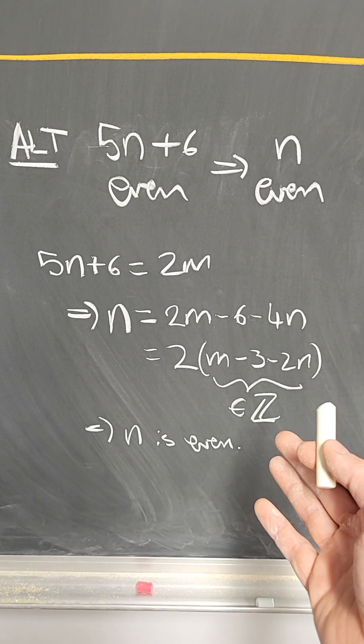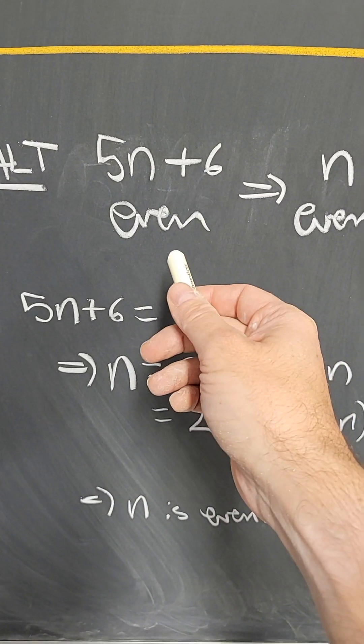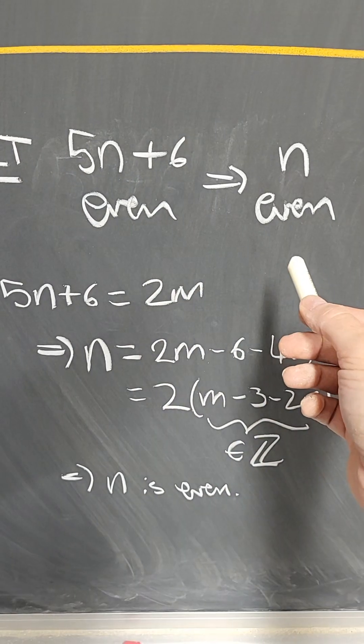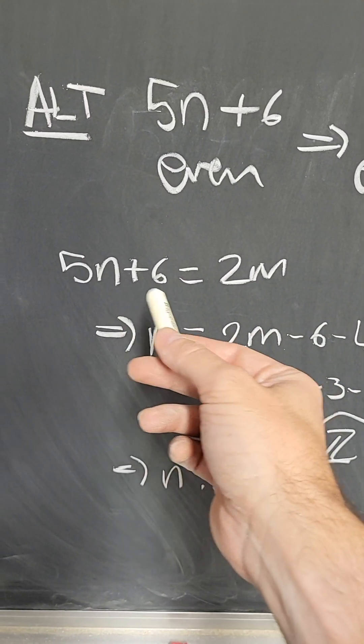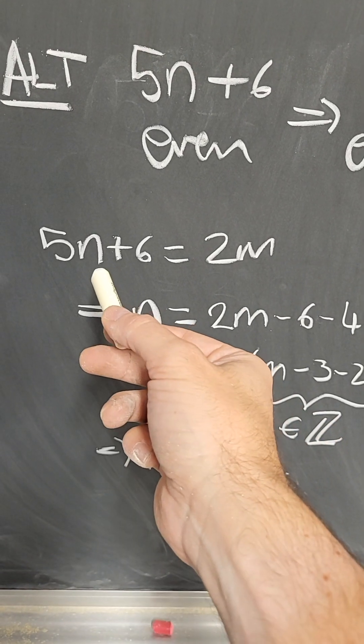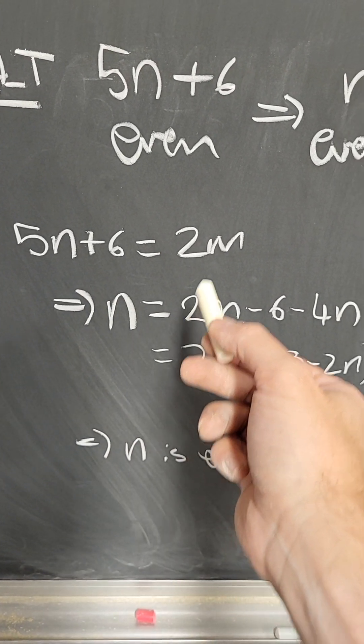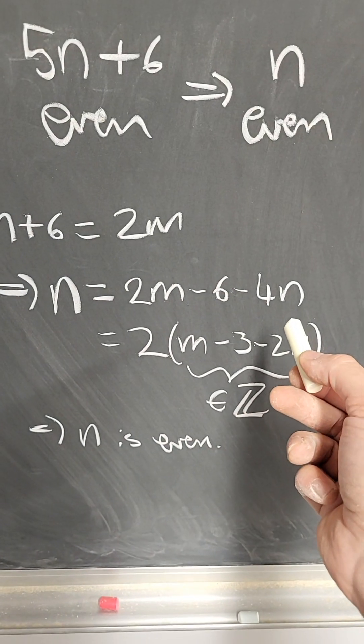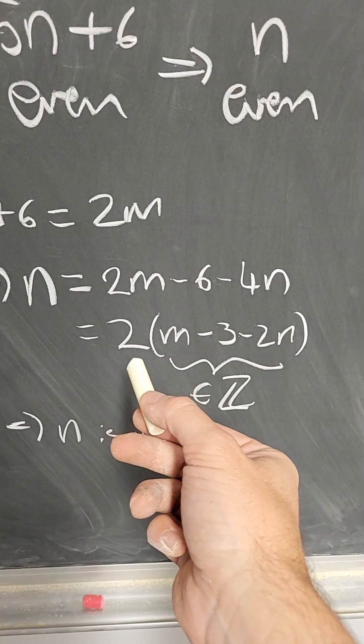By the way, one can also prove that 5n plus 6 is even implies that n is even as a direct proof by writing 5n plus 6 as twice an integer. And therefore, you can isolate 1n here and write it as 2m minus 6 minus 4n, and then take a common factor of 2.